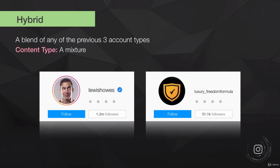A hybrid account is a blend of any of the previous three account types. Lewis Howes is a great example — he posts a lot of viral content and quotes, posts about himself personally, and also promotes his products. He's blended all three account types to take the best from each world. My own Luxury Freedom Formula brand is a business account at heart, but I also post viral and personal content so people trust me and are more likely to buy.